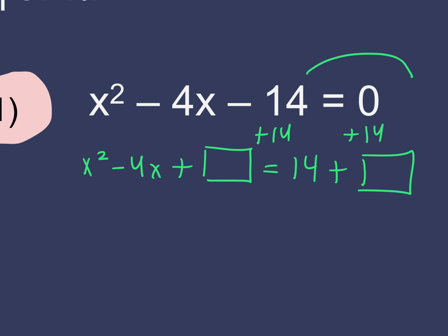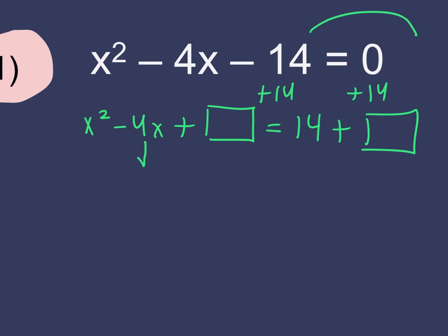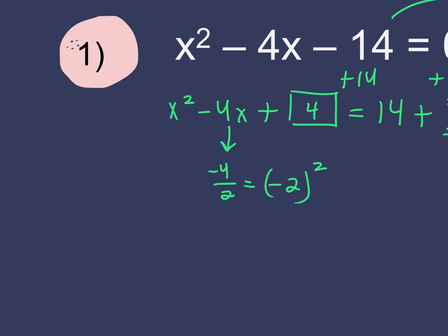Now take your b term — what is your b term? Negative 4. Take negative 4 and divide it by 2. What do you get? Negative 2. Take your b term, divide by 2, you get negative 2. Now I'm going to square it. What's negative 2 squared? 4. That's what goes in your square. You've completed the square now. What you do to one side, you do to the other. Look — you have created a perfect square trinomial: x² minus 4x plus 4.